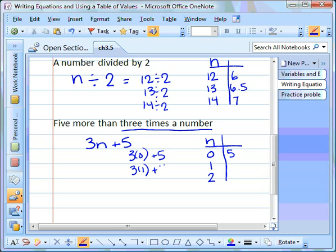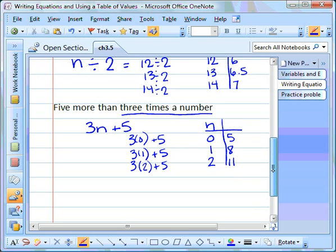Try the next one. 3 times 1 plus 5. 3 times 1 is 3, plus 5 is 8. And our third one. 3 times 2 plus 5. 3 times 2 is 6, plus 5 is 11. Now notice, we have multiple steps in this one. And even though our values for n were in order, our values on the other side, our solutions did not come out numbers that were in chronological order, or directly in order.